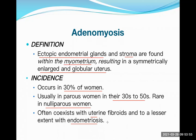Endometriosis is the ectopic presence of endometrial tissue in areas other than the normal endometrial cavity — such as in the fallopian tube, ovary, other structures, or even rarely the lungs. Cases of hemoptysis every month due to endometriosis have been reported. Adenomyosis and endometriosis may occur together.